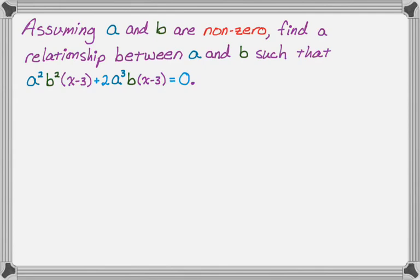So the problem looks like this. Assuming A and B are nonzero, find a relationship between A and B such that A squared, B squared, the quantity x minus three, plus two A cubed times B times the quantity x minus three equals zero. So that's a problem that we want to solve.